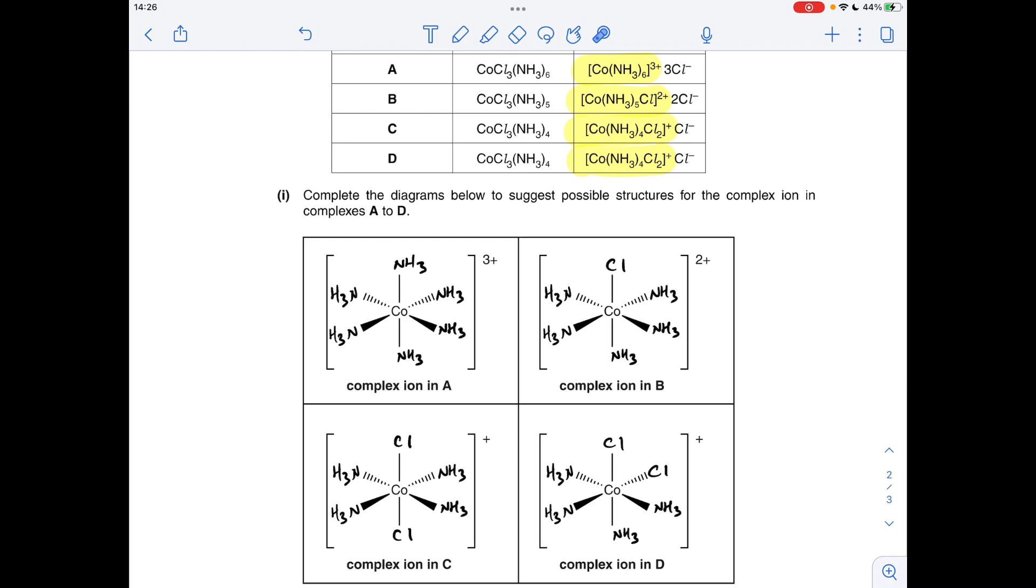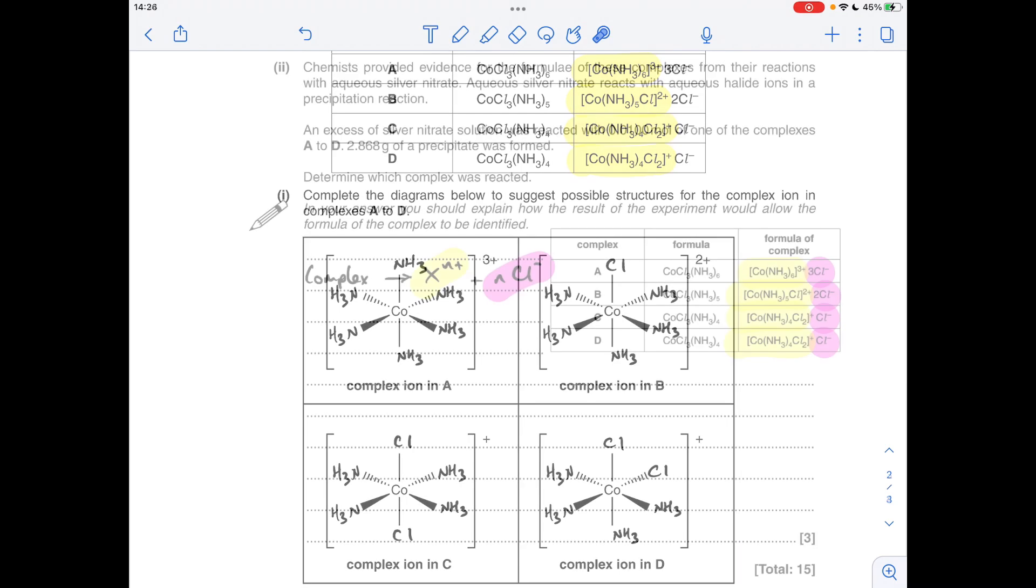So I've drawn the trans version here, so the chlorides are 180 degrees apart. In this one you could have done them that way or you could have done them that way. And for D, you need the two chloride ligands 90 degrees apart, so I've put them there and there. You could have had them there and there and so on, and these can be either way around as well. So you don't have to put the trans on the left and the cis on the right.